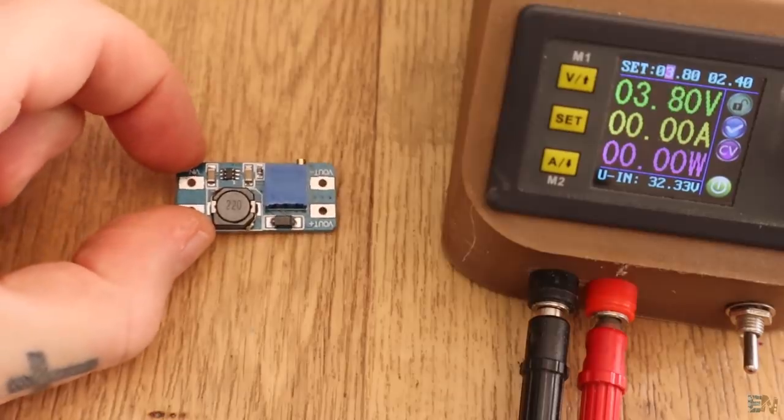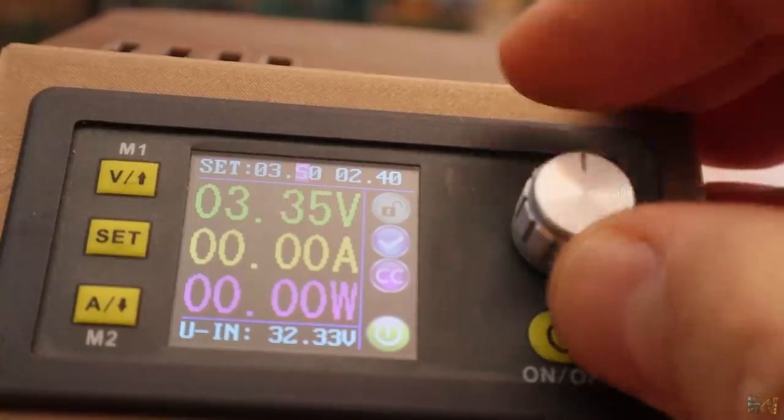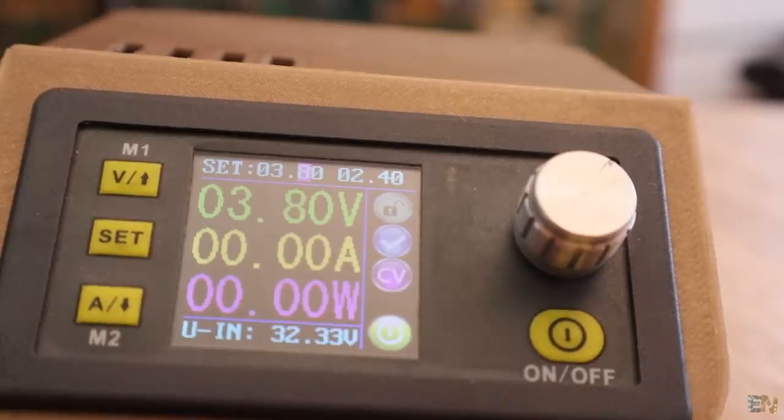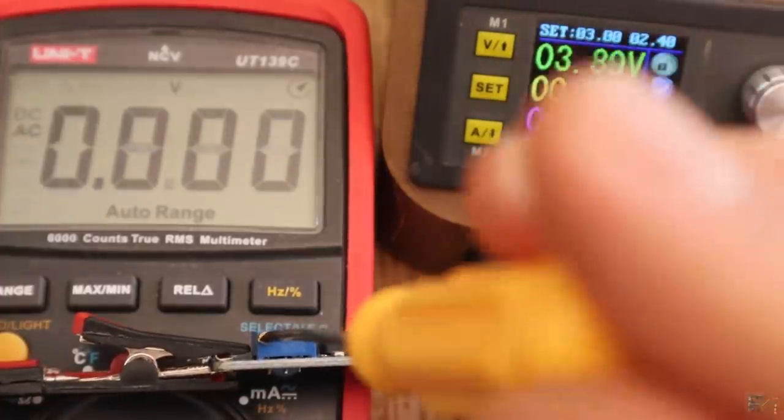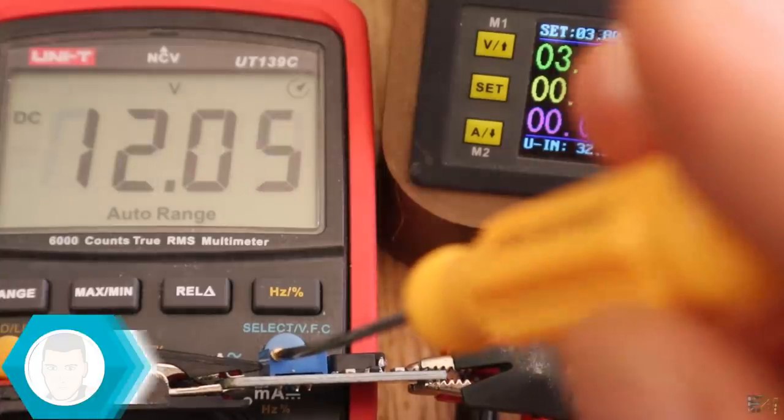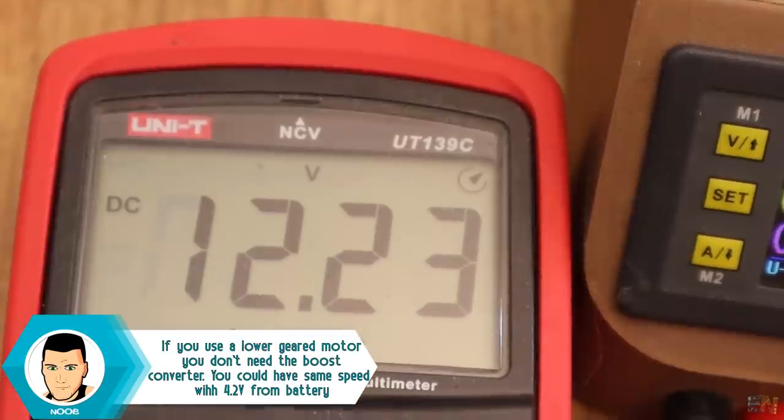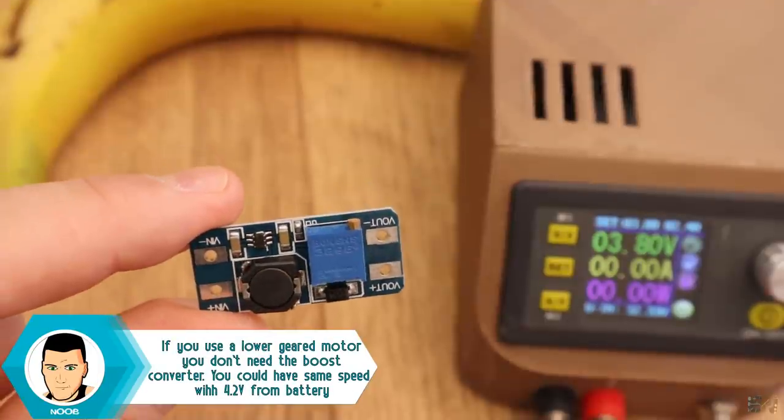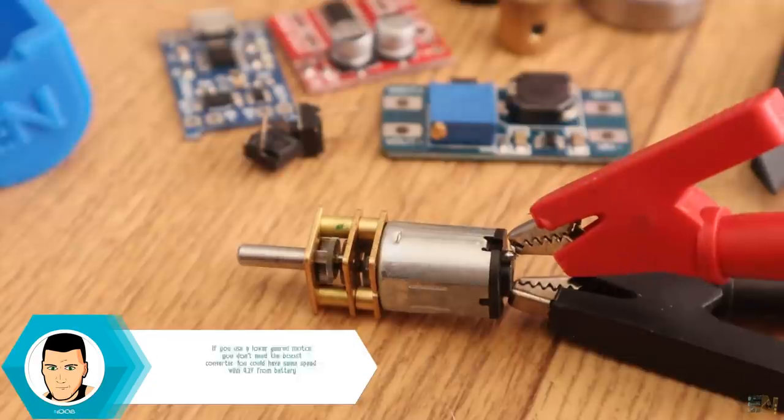Okay, so first thing I do is connect the boost converter to the power supply and I will apply 3.8V. I connect my multimeter and rotate the potentiometer till I get 12V. Using this potentiometer, we could also change the speed of the motor since that is given by the applied voltage.